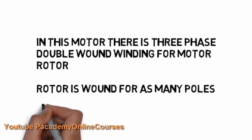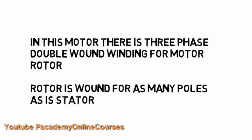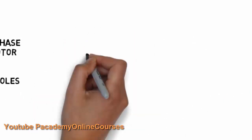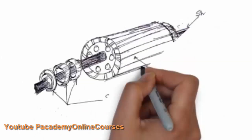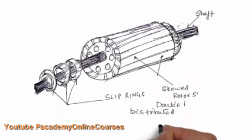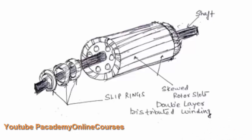The rotor is wound for as many poles as the stator. The rotor has three windings and those three windings are wound in a double layer, that is top and bottom layer. The three phases are brought out, R Y B three phases which will be brought out and connected to the slip rings.